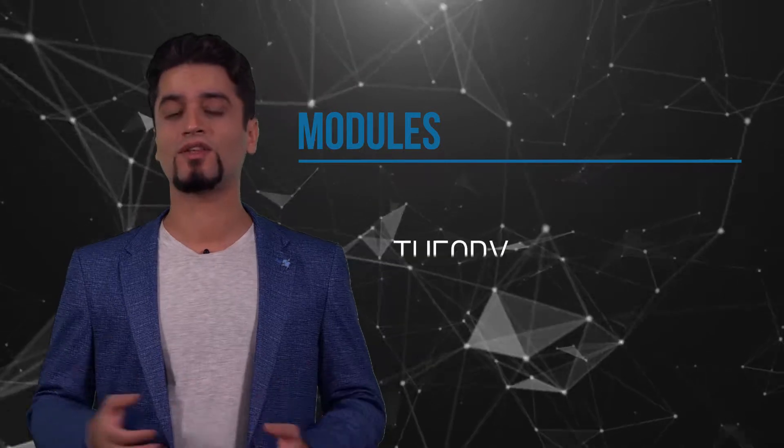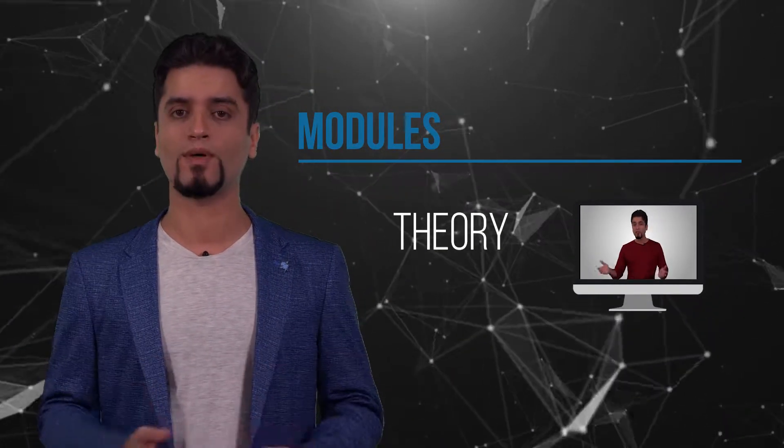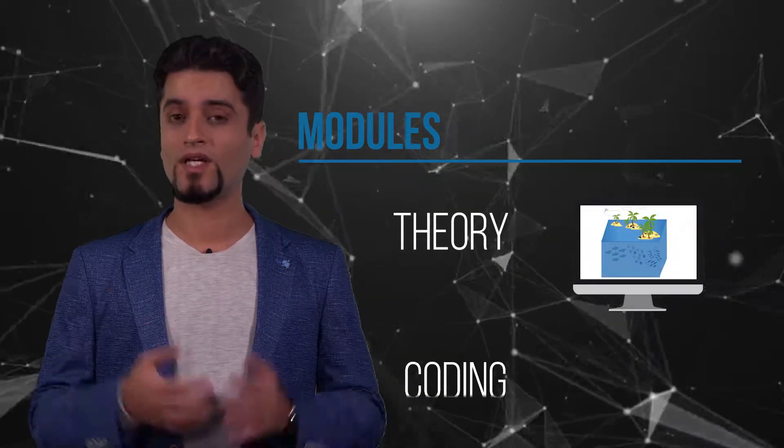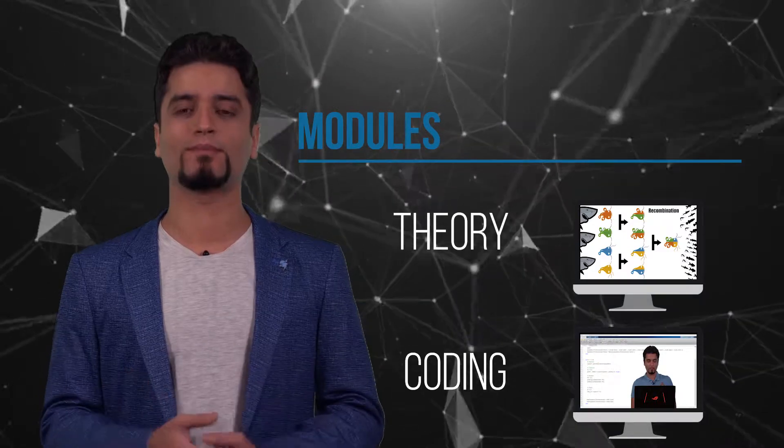We have several modules to cover the main mechanisms of the genetic algorithm. Each module starts with a lecture that takes you through the theory with a lot of intuitive analogies and examples. Then we have coding videos to show how each mechanism can be implemented. At the end of the course, we will be solving a number of case studies to practice how to solve problems with the genetic algorithm.